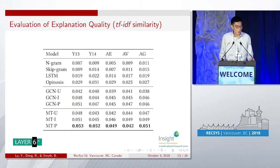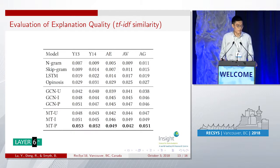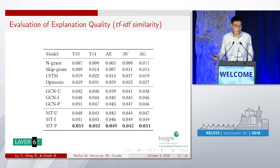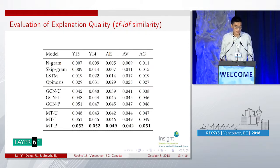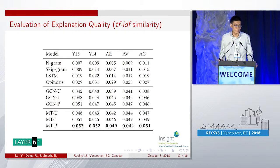As a second metric for explanation quality, we use TF-IDF similarity, which measures how relevant the generated review is to the ground truth. Again, our multitask learning approach outperforms all the baseline models across all datasets.